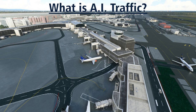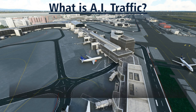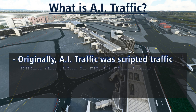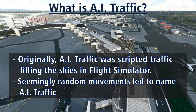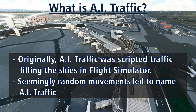AI traffic is other airplanes operating in your simulator. In previous iterations of Flight Simulator, the only other traffic that would appear in your simulator was pre-programmed by a computer. These models followed scripted routes that taxi to a runway, took off, flew around, and came back and landed and taxied to a gate. Because of the randomness of these scripted routes, these appeared to be artificially intelligent aircraft, when really they were just scripts running airplane models around your simulator.